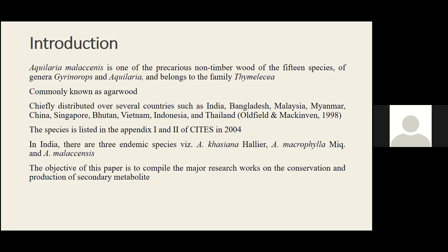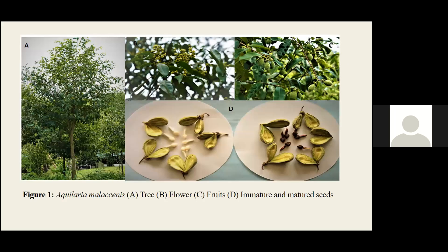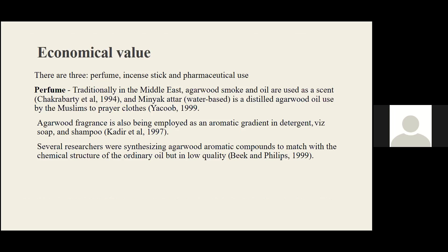The objective of this paper is to compile the major research work on the conservation and production of secondary metabolites. This is a three-year-old Aquilaria malaccensis tree — shown here with flowers, fruits, and seeds. There are three main economic principles: perfume, incense sticks, and pharmaceutical uses.